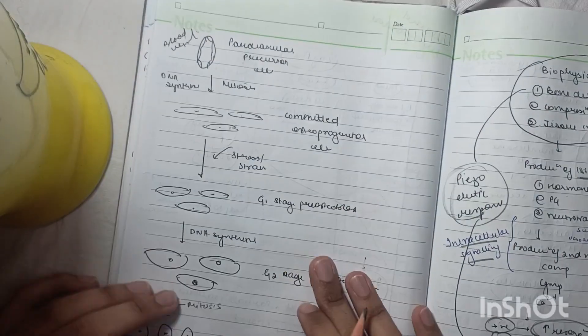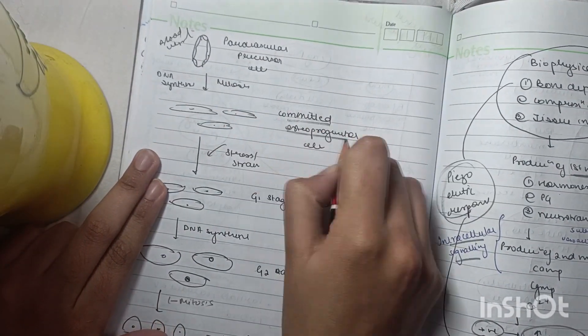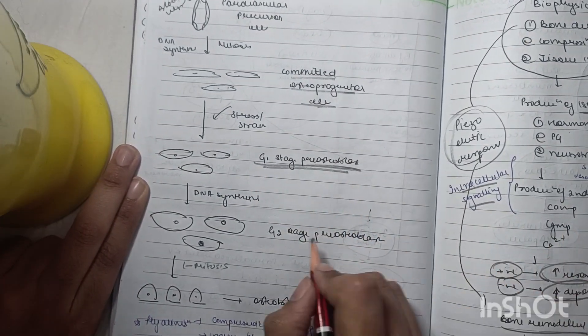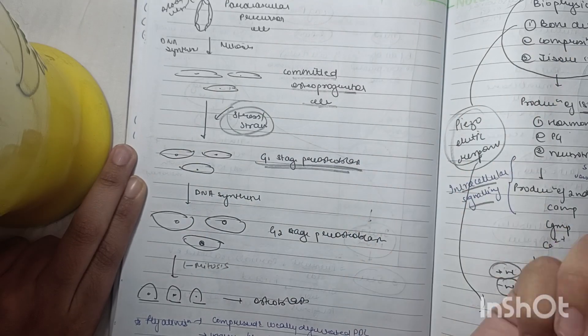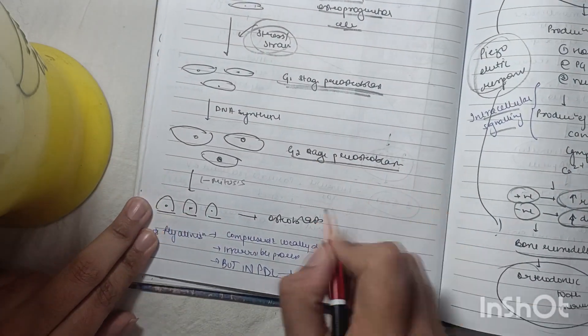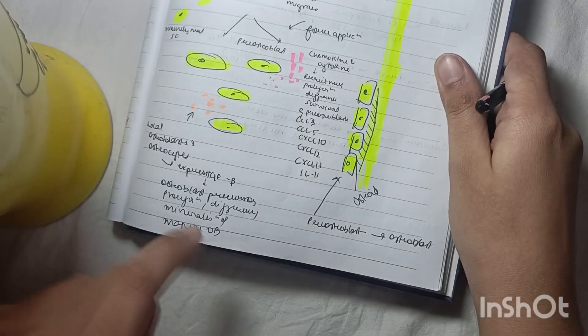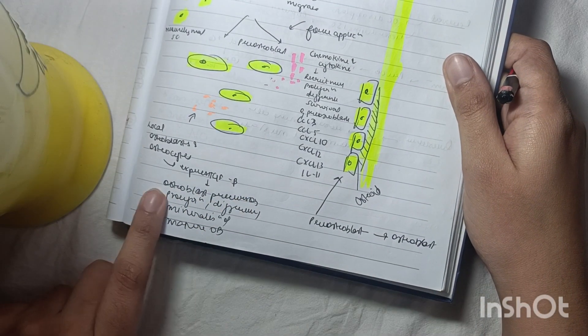Pre-osteoblasts progress through stages: committed osteoprogenitor cells, G1 pre-osteoblast (stress and strain from orthodontic force), G2 stage pre-osteoblast, osteoblast, local osteoblast, and osteocytes. They express transforming growth factor beta for proliferation and mineralization.